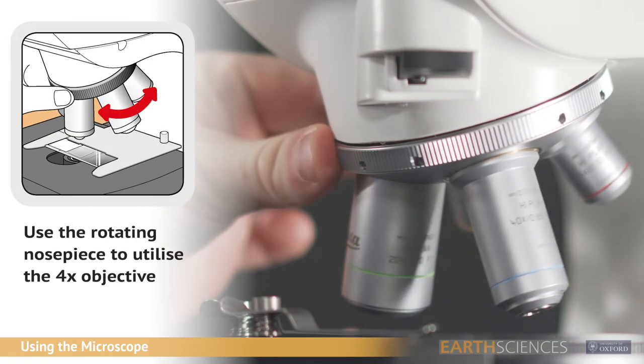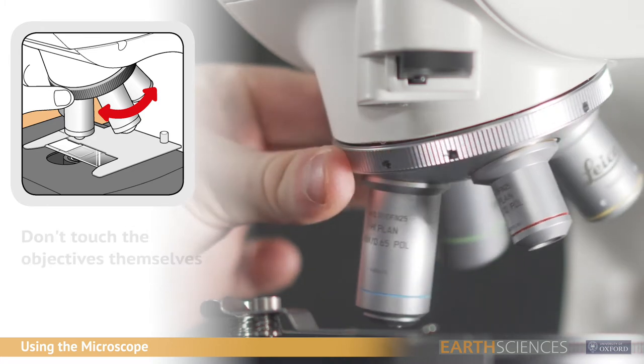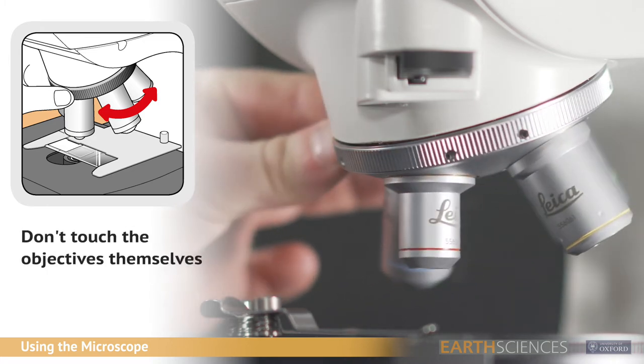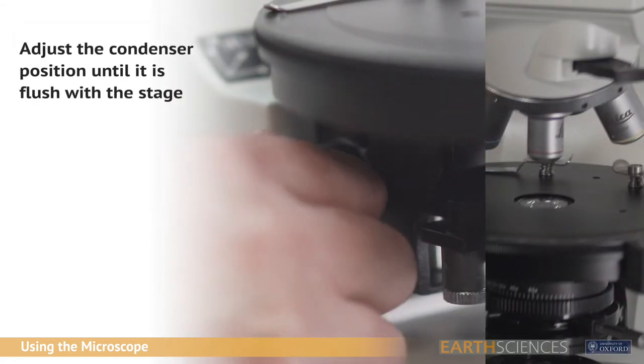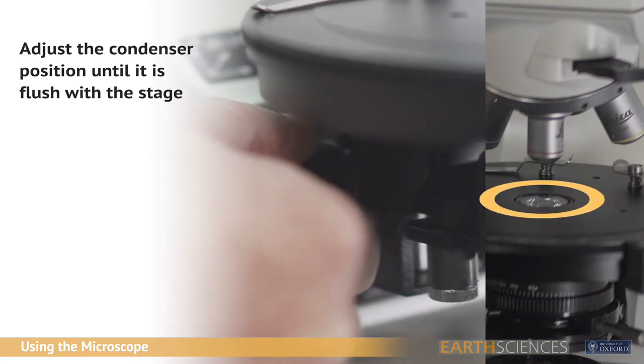Use the rotating nose piece to adjust the microscope to the 4x position. Don't handle the objectives themselves as this could damage the microscope. Use the condenser height focus knob to adjust the condenser until it's flush with the stage.